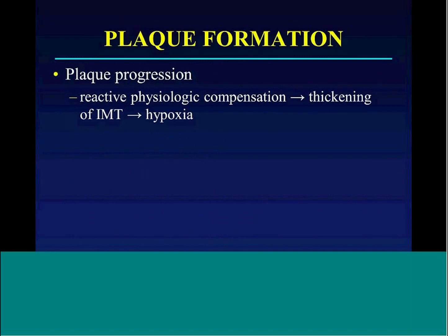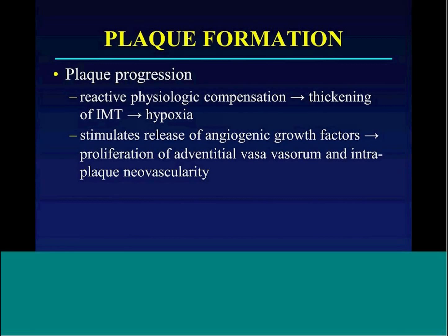You then have a combination of smooth muscle cells, inflammatory cells, and necrotic foam cells in the vessel wall. This results in reactive physiologic compensation causing thickening of the IMT, which leads to further hypoxia. The combination of factors resulting in hypoxia stimulates the release of angiogenic growth factors, which result in a proliferation of the adventitial vasa vasorum as well as intraplaque neovascularity.